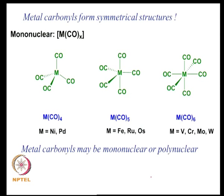Vanadium carbonyl V(CO)6 is an exception because it tends to be paramagnetic, not diamagnetic — that is one exception we note. Metal carbonyls tend to form reasonably symmetric structures, not necessarily tetrahedral or octahedral, although those geometries are indeed observed. Typical examples are nickel tetracarbonyl, which is easy to synthesize, and chromium hexacarbonyl, which has a nice octahedral geometry. In all cases, carbon monoxides are symmetrically distributed around the metal.